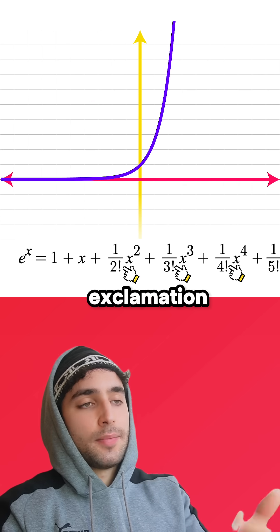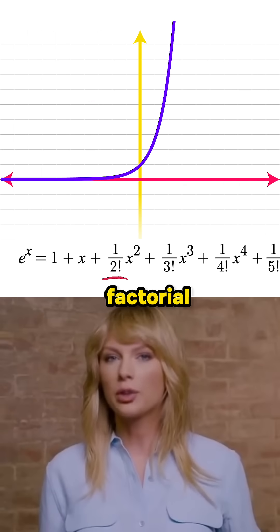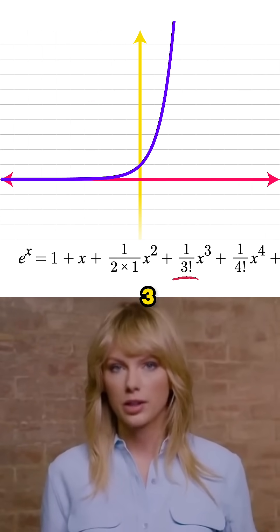Wait, but what's up with the exclamation marks? They just mean factorial. So two factorial is two times one, and three factorial is three times two times one, and so on.